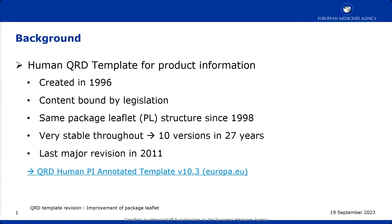Just to give a bit of background on the QRD template for human products: this was created in 1996, right at the beginning of the EMA creation. The content of the QRD template is bound by the legislation — all the requirements come from the directive. The package leaflet as we know it today roughly comes from 1998. The first two years it had a slightly different structure, but the current structure is from a revision in 1998.